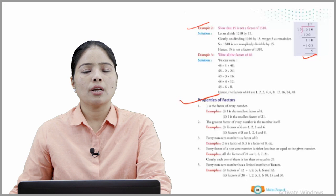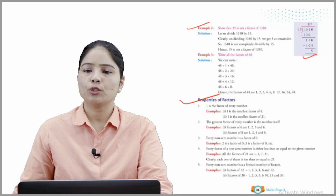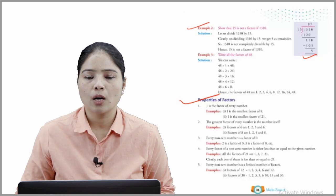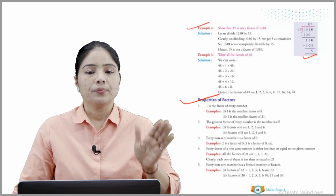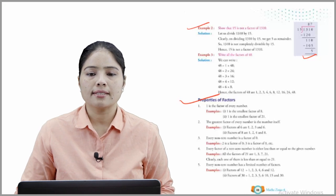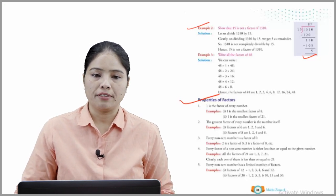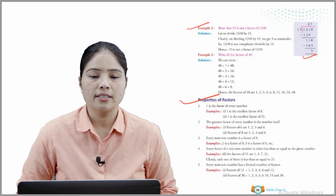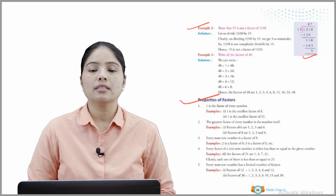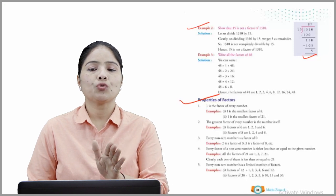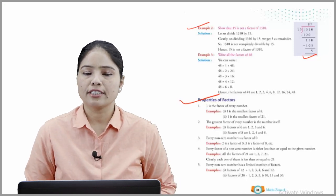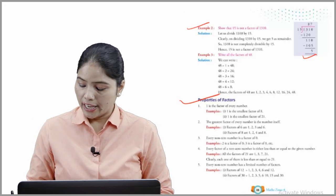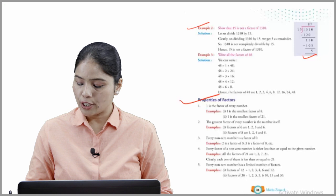Property 4: Every factor of a non-zero number is either less than or equal to the given number — for example, all factors of 21 are 1, 3, 7, and 21, and each one is less than or equal to 21. Property 5: Every non-zero number has a limited number of factors — for example, factors of 12 are 1, 2, 3, 4, 6, and 12; factors of 30 are 1, 2, 3, 5, 6, 10, 15, and 30.